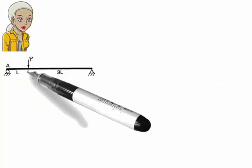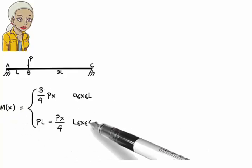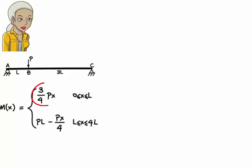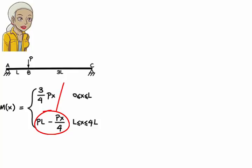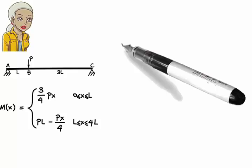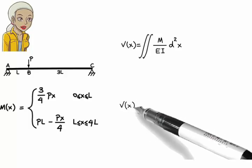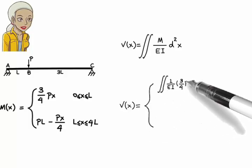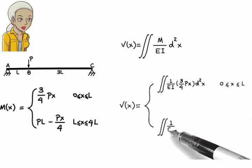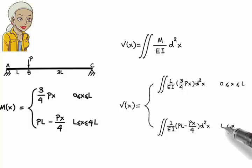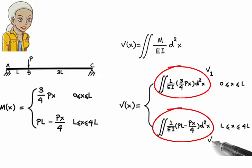Since we have two moment equations, we must write two deflection equations, one for each beam segment. We use this equation to get a deflection equation for the left segment, and this one for the right segment. The general deflection equation is v(x) equals the double integral of M over EI. Let's refer to the left segment equation as v1 and the right segment equation as v2. We'll assume EI is a constant for the entire beam.